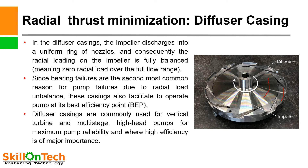Radial thrust minimization: Diffuser casing. You can see a picture of a diffuser casing here — this is the impeller, and this is the diffuser casing where guide vanes have been provided at every stage at the discharge of the impeller. In the diffuser casing, the impeller discharges into a uniform ring of nozzles, and consequently the radial loading on the impeller is fully balanced, meaning zero radial load over the full flow range.